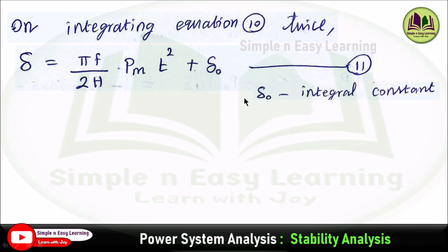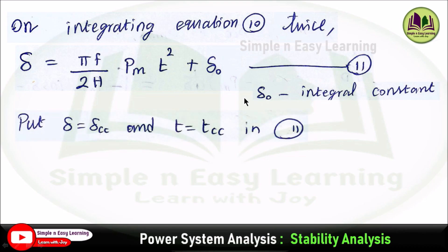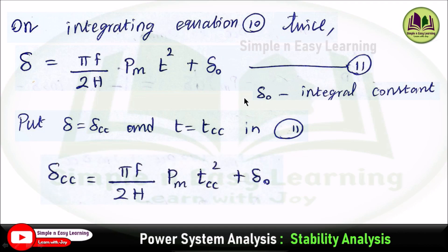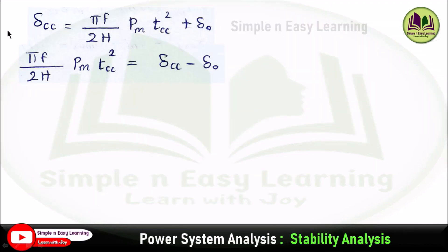Here, delta_0 is the integration constant. Now, substituting delta equal to delta_cc and t equal to t_cc, where delta_cc is the critical clearing angle and t_cc is the critical clearing time. From there we get delta_cc equal to pi f divided by 2h into P_m times t_cc squared plus delta_0. Bringing delta_0 to the other side gives delta_cc minus delta_0, and solving for t_cc squared gives: t_cc squared equals (delta_cc minus delta_0) divided by (pi f P_m divided by 2h).